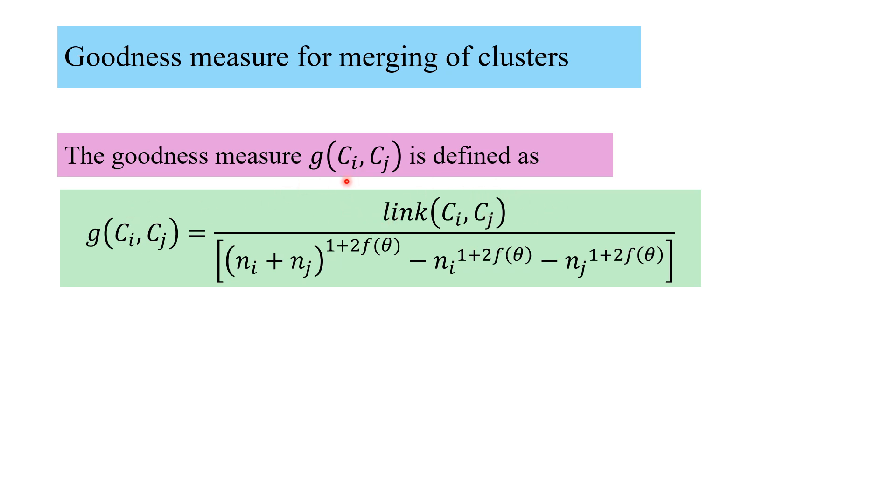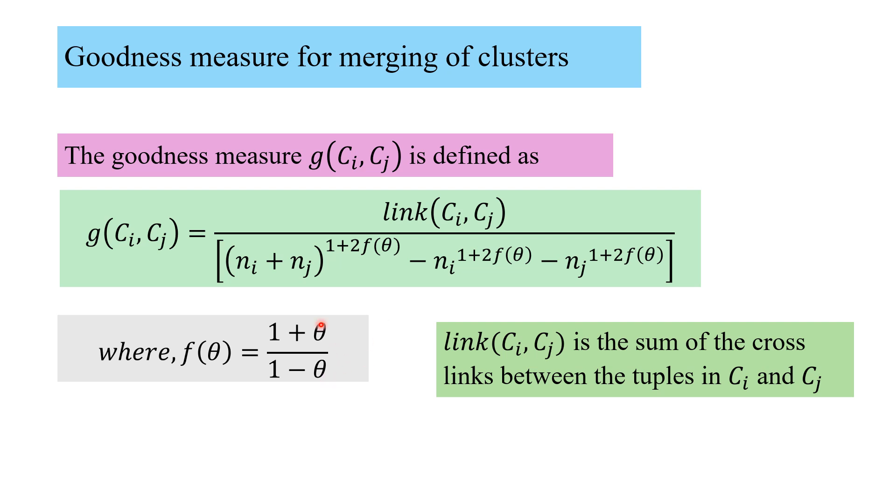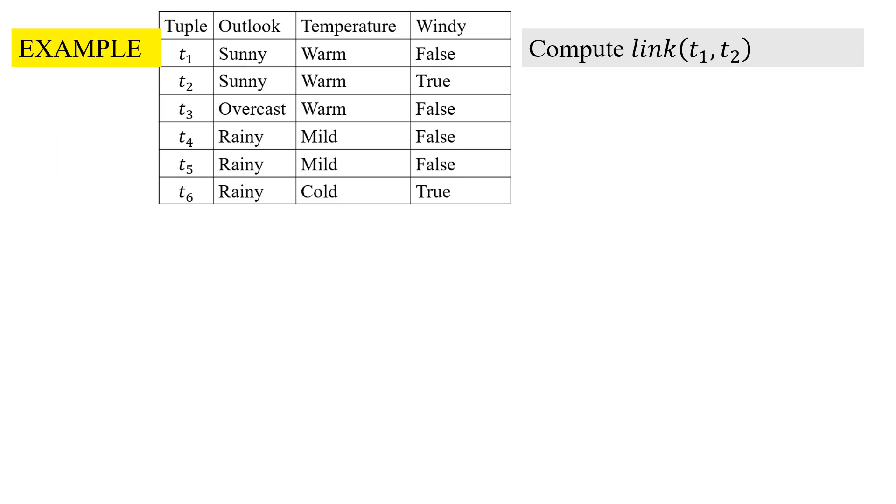Goodness measure for ci, cj is defined as link(ci, cj) with this denominator where these are the number of points in ci, cj, and the function f(theta) is a function of theta. Link(ci, cj) is the sum of the cross links between the tuples in ci and cj. We add up all the link values.